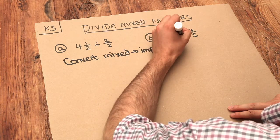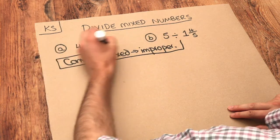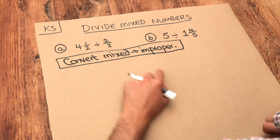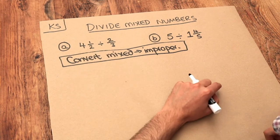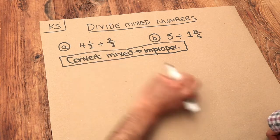And then we would just divide those improper fractions like we usually would. Remember this is called a mixed number because it has a whole part and a fractional part, so this 4 and a half.